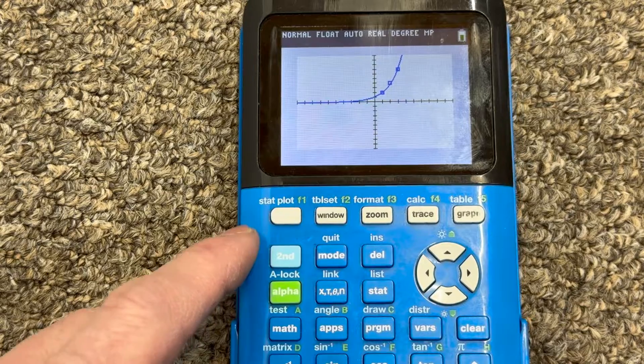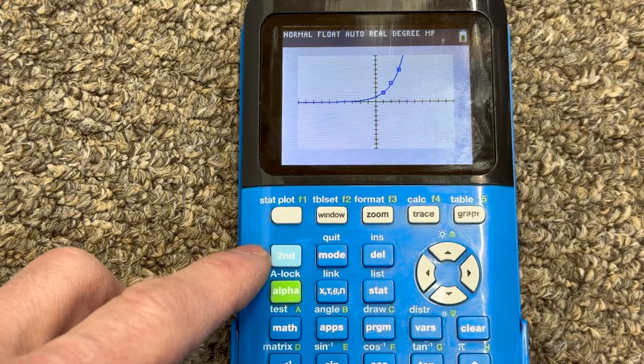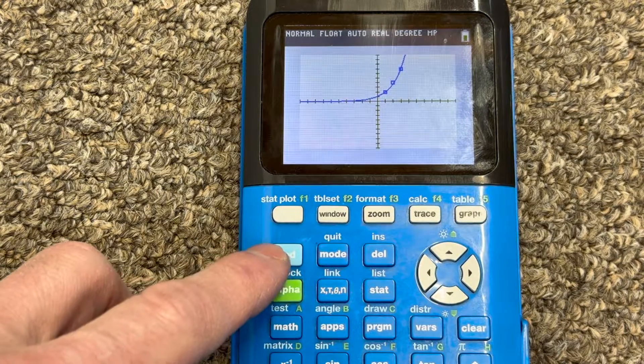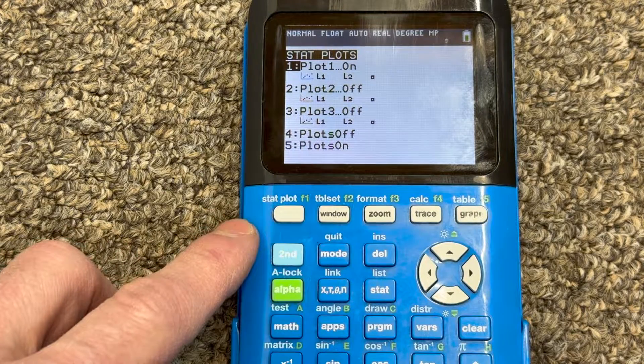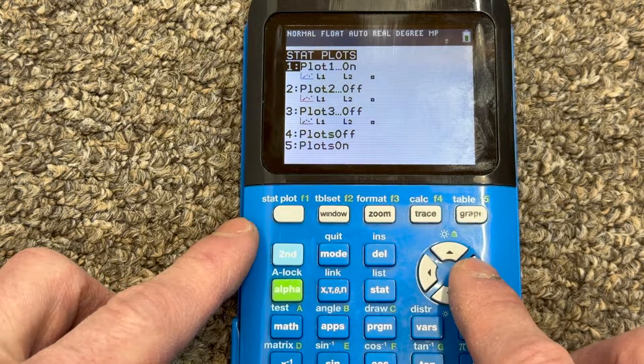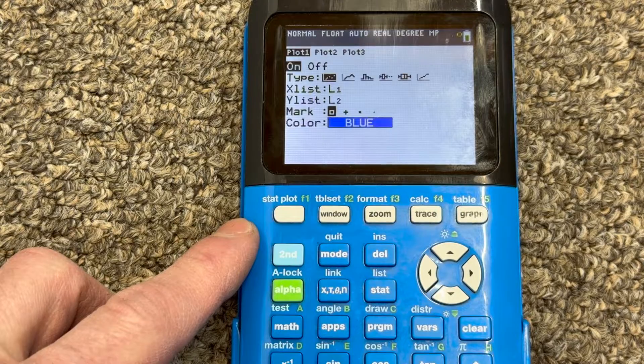But what you can do, if you're not seeing that, is you can go to where it says second and stat plot, and you see how I have mine as plot on. Well, if you press enter, you can toggle between off and on.